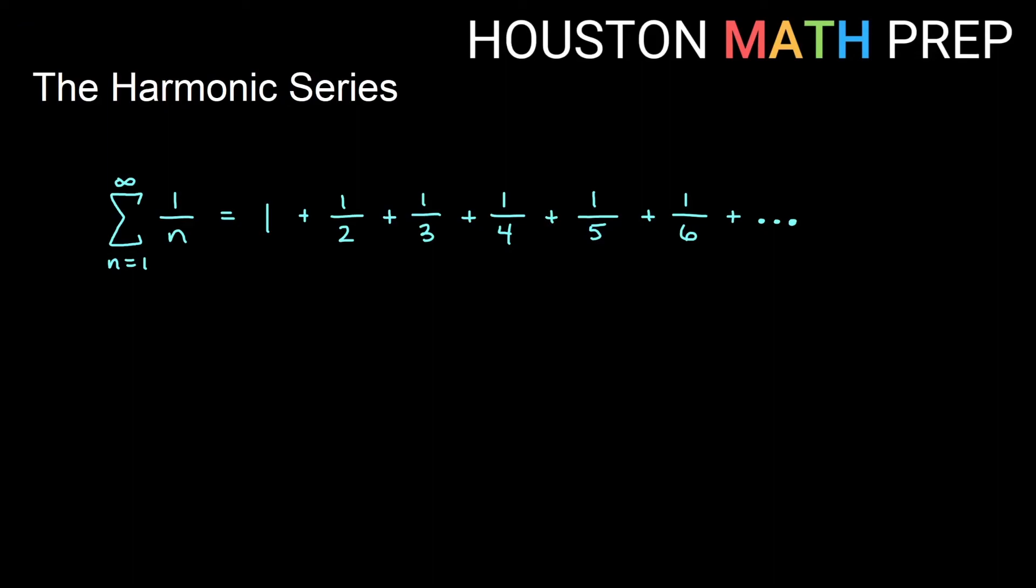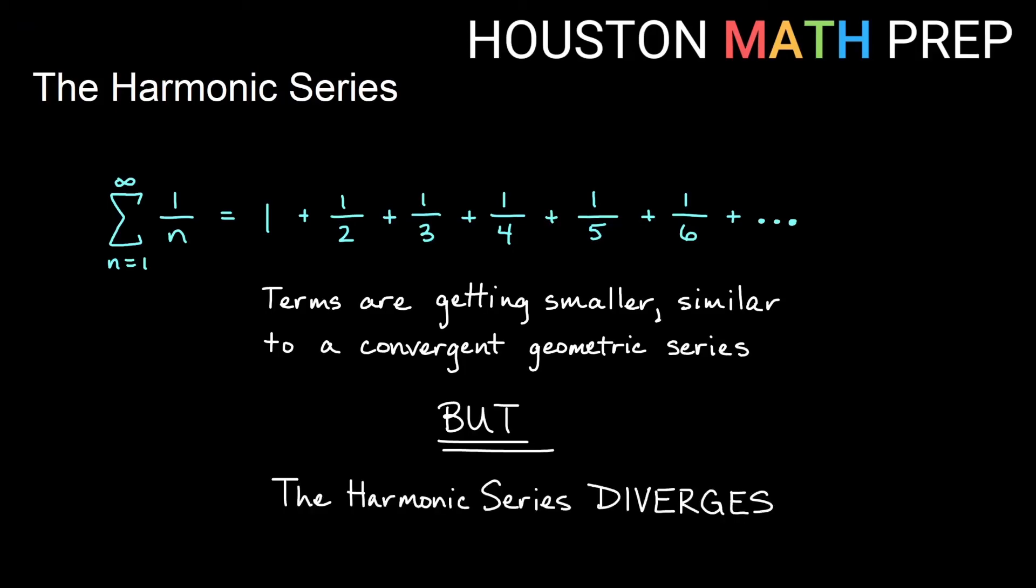If you think about the terms 1 over n and what those terms do, they get smaller and smaller, very similar to what a geometric series does when it converges. But the overall behavior of the harmonic series is a bit different than geometric series where the terms are getting smaller. The overall harmonic series actually diverges.